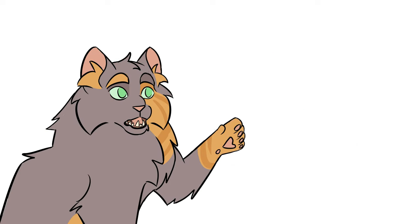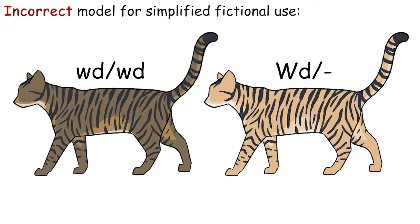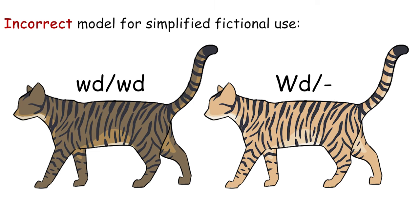We honestly don't know that much about wideband, so I can't give you much more than this. For fictional purposes, I like to use the outdated monogenetic dominant model just because it's simpler and ape brain-like simple pattern. Capital WD for golden and lowercase wd for not golden. It's not accurate, but if it's just for art purposes, it'll save you some headache.